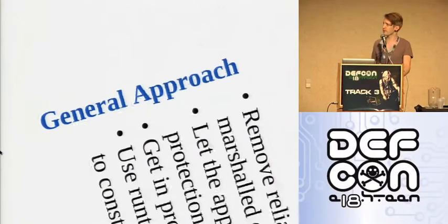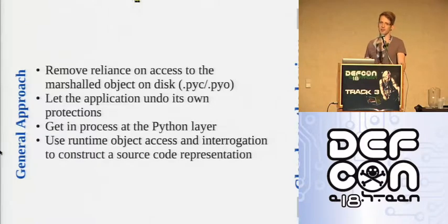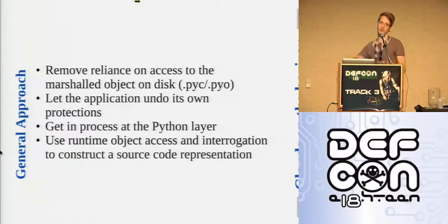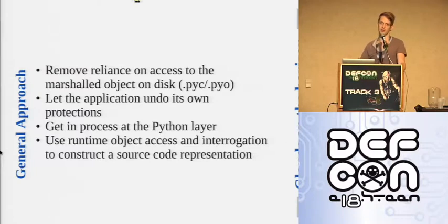The general approach with Pyretic: I want to remove the reliance on having access to the file on disk and work in memory only. Whatever protections like marshalling are in place, I want the application to undo them — because however complex their marshalling is, they're going to unmarshal it, and when it's in memory it's just a standard Python object, which is much easier to understand than pissing about at the C layer.